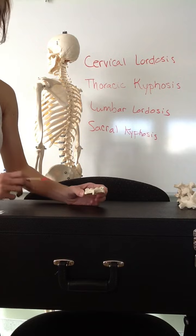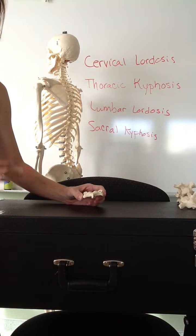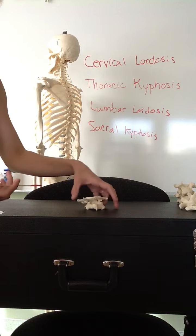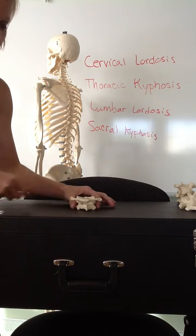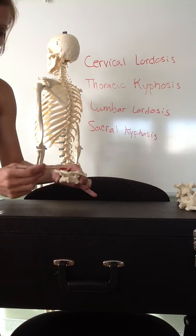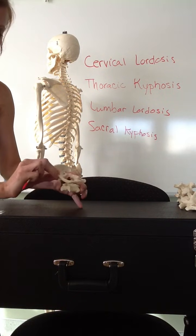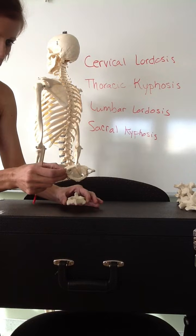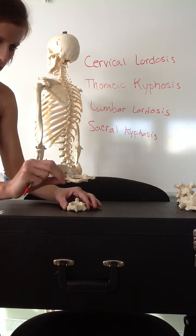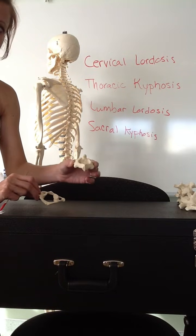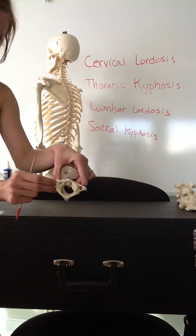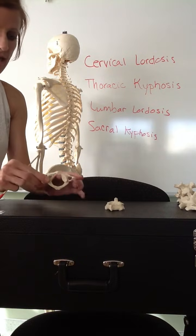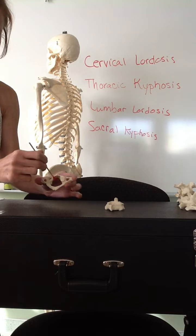The top two cervical vertebrae are actually special and should be known by name. They are called the atlas and the axis. C1, the very first vertebra, is the atlas — just like in Greek mythology, atlas held the world on his shoulders, and this one holds your head. C2, the second cervical vertebra, is the axis. When we look at C1, the atlas, we see it is the only vertebra that does not have a body.